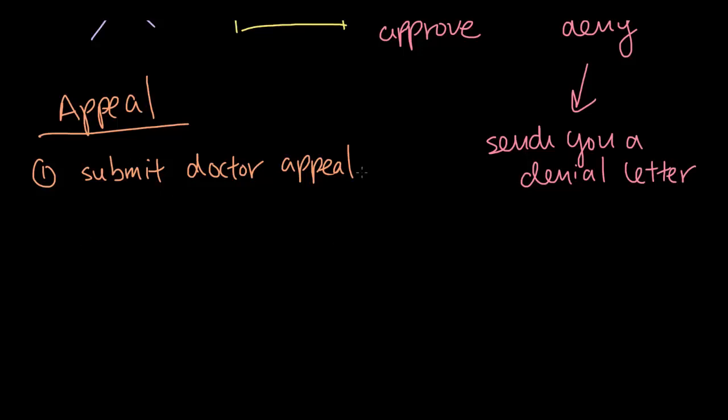Maybe the appeal will include some additional documentation, some documentation that the doctor forgot to include in the first place. Maybe the doctor forgot to tell them that you already had therapy and that's why he's requesting the injection because the therapy failed. So in his appeal, he'll include that additional information.